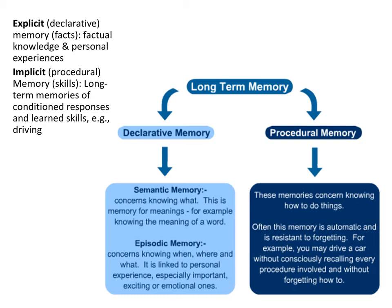Implicit memory refers to knowledge that we cannot consciously access — it is remembering without awareness. For example, you may remember how to ride a bike or walk, but it is difficult to explain how you do it.